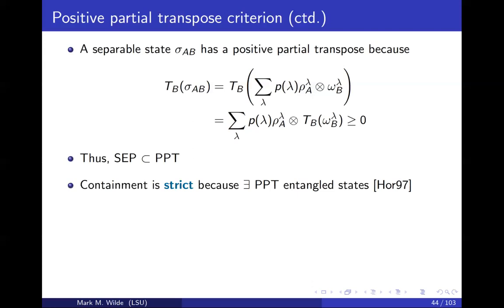So what this is saying is that when the partial transpose acts on a separable state, you get a positive semi-definite operator. The set of separable states is contained in the set of PPT states. The containment is strict because there do exist PPT entangled states. What we proved here is that if a state is separable, then it has a positive partial transpose. What is the contrapositive of that? If a state does not have a positive partial transpose, then it is not separable, or equivalently, if a state does not have a positive partial transpose, then it is entangled. But that doesn't tell you anything about the converse.